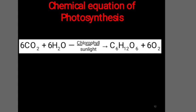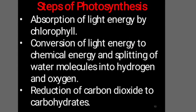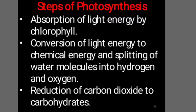Here is the chemical equation of photosynthesis: 6 molecules of carbon dioxide combines with 12 molecules of water in the presence of chlorophyll and sunlight to form 1 molecule of glucose (C6H12O6) and 6 molecules of oxygen. The steps of photosynthesis are: first, absorption of light energy by chlorophyll; second, conversion of light energy to chemical energy and splitting of water molecules into hydrogen and oxygen; third, reduction of carbon dioxide to carbohydrates.